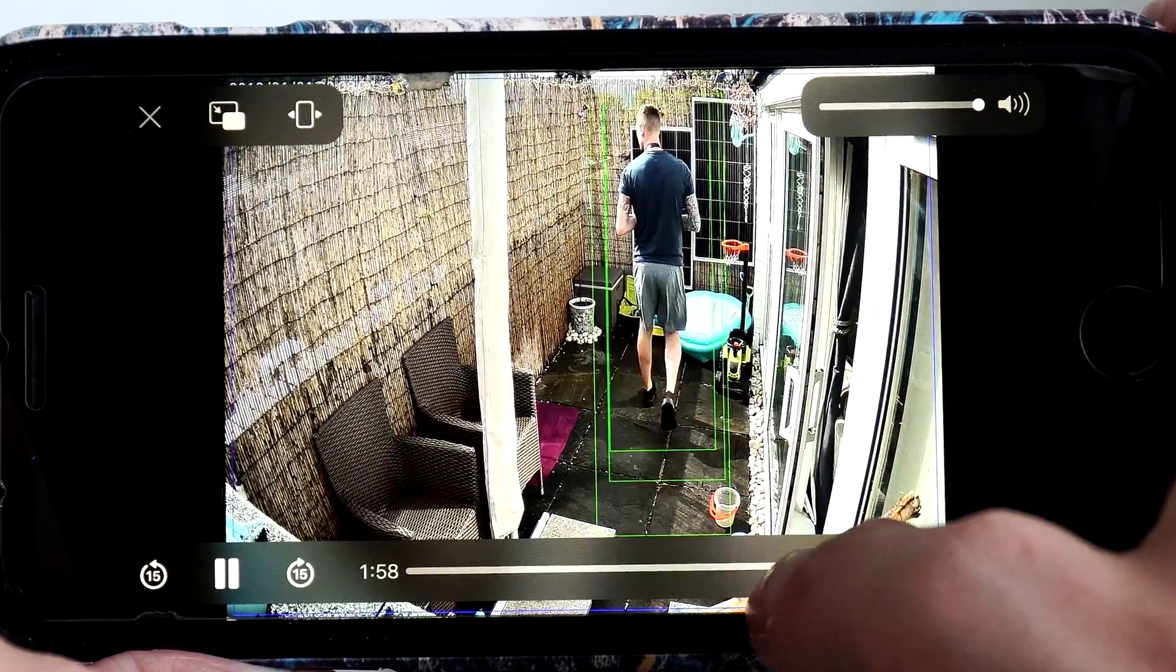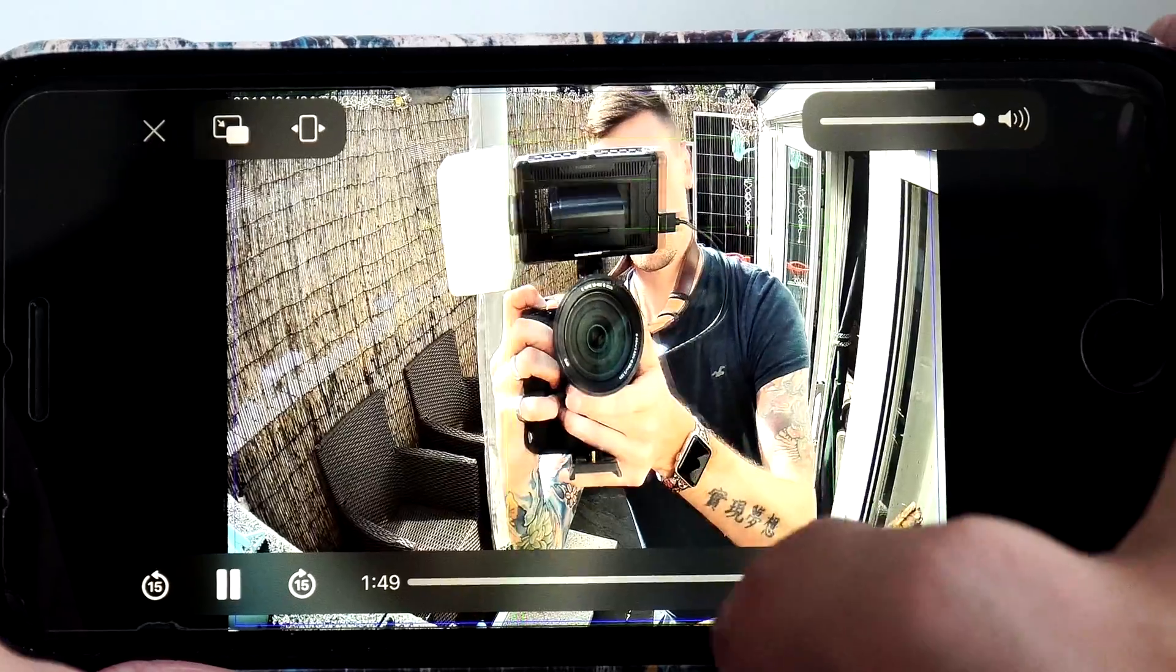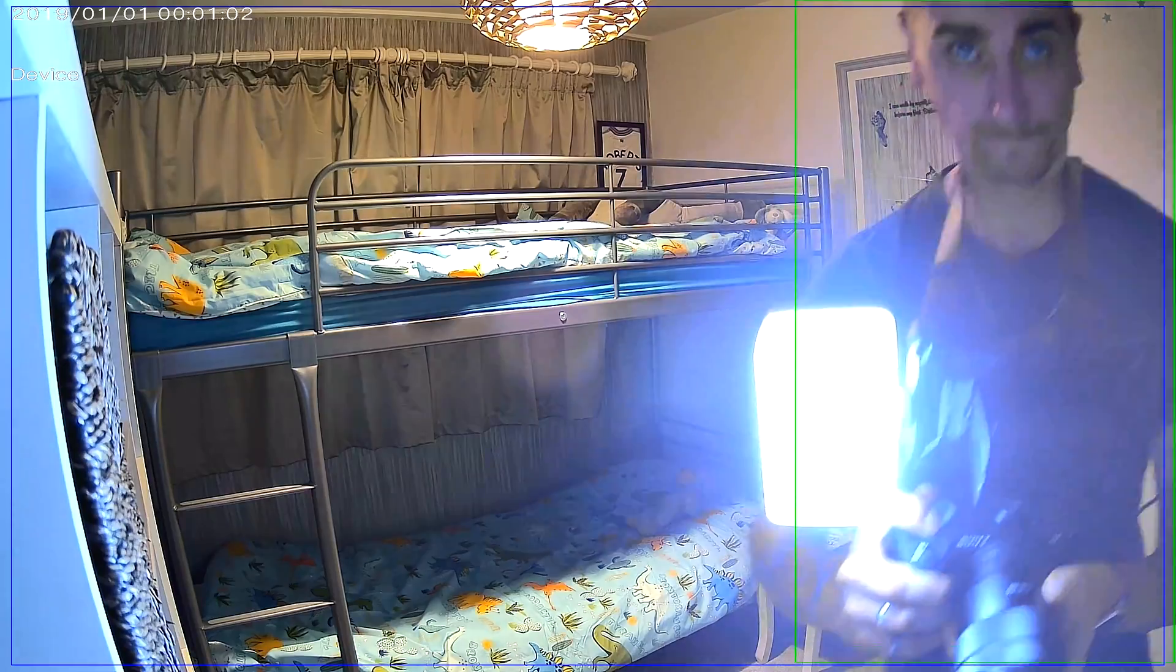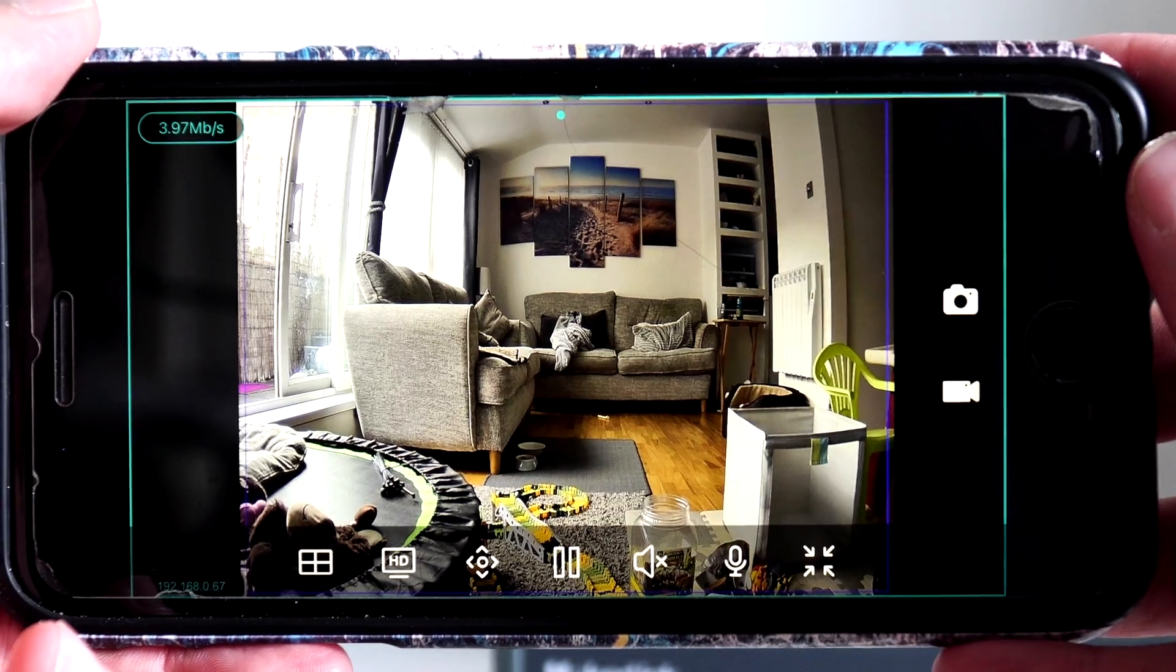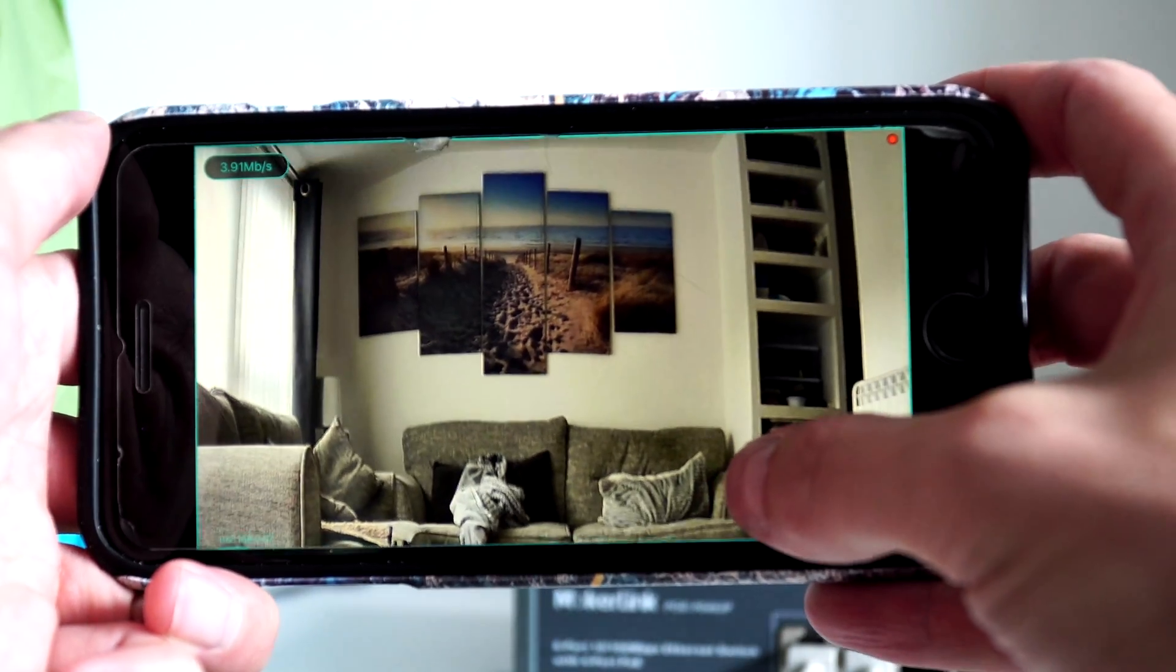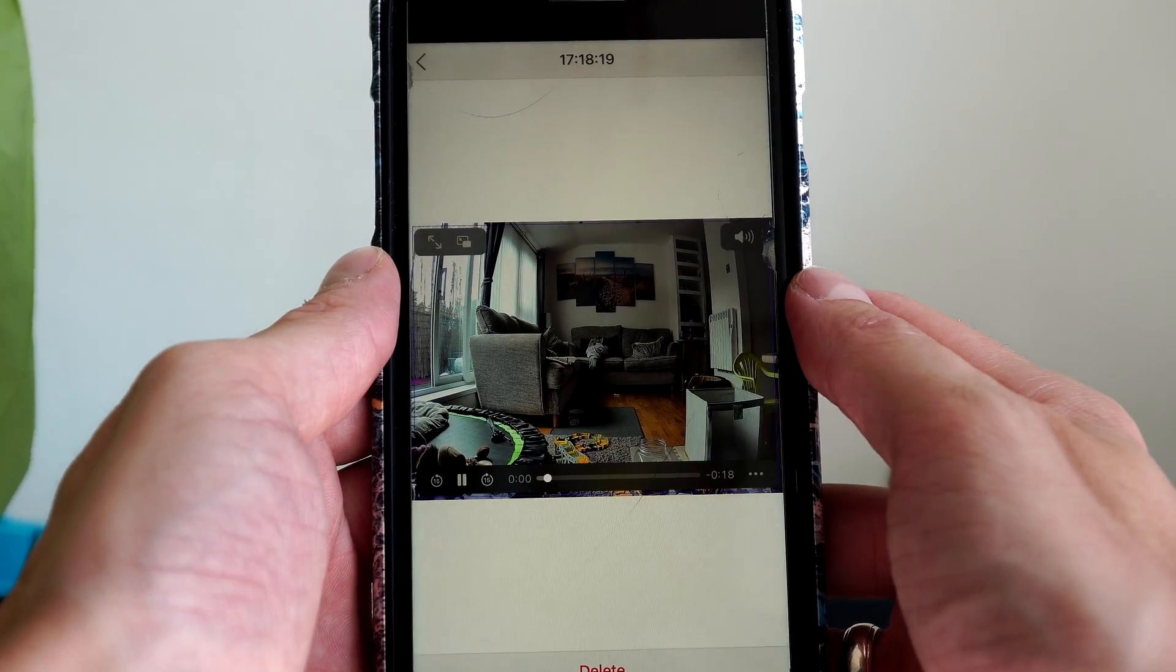On the app, you'll also see a green box around what it's detected movement, and in the settings on the app, you can adjust the sensitivity of the motion detection. Whilst I was playing around with these cameras, the motion detection kept going off, so I actually turned mine off and decided I'd actually touch the record button on the screen and record sections myself.